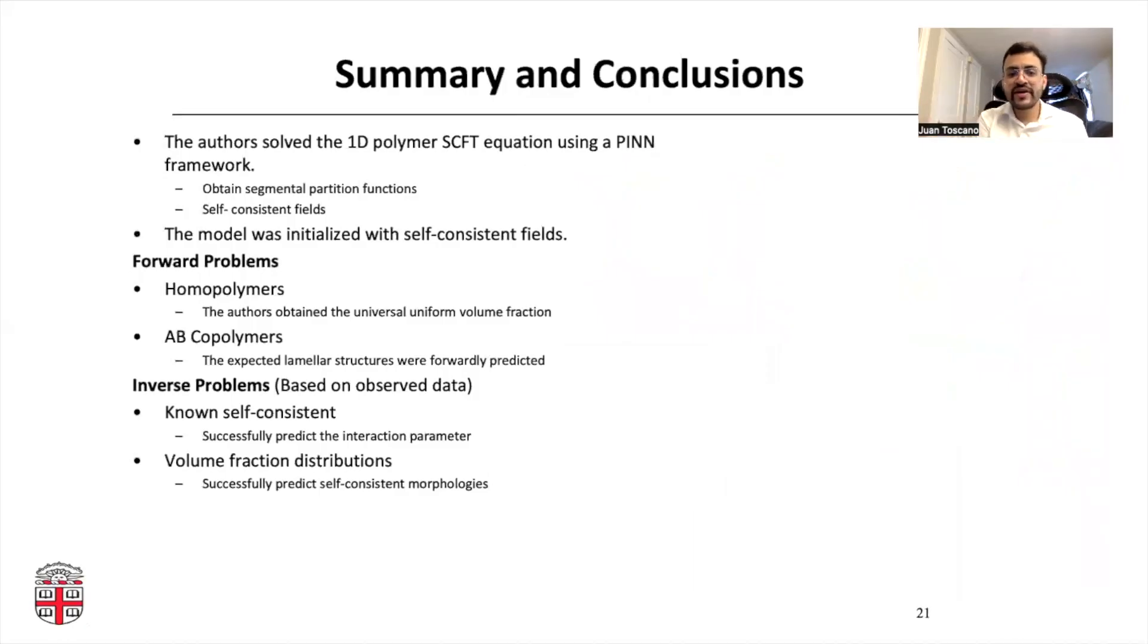In summary, the authors solve a 1D polymer self-consistent field theory using a physically informed framework. They obtain segmental partition function and self-consistent fields mainly. To avoid the multiple solutions, the local free energy, they initialize the model using these self-consistent fields obtained by several spectral methods. They analyze two forward problems, homopolymers and AB copolymers. And for the inverse problems, they get back the Flory Huggins interaction parameters and predict the self-consistent morphologies. Thank you so much for watching, and until the next time.